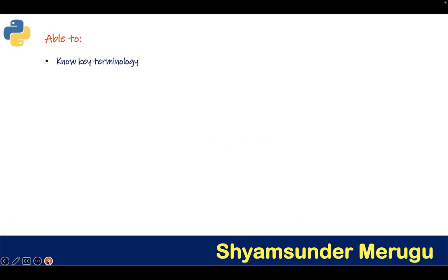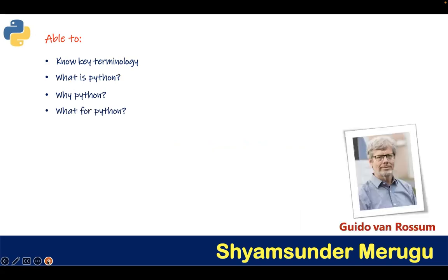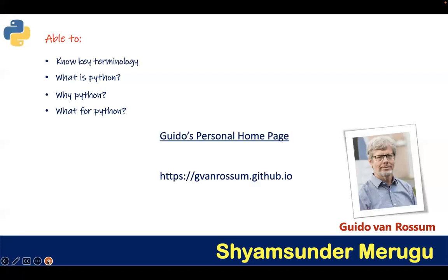Coming to this particular video lecture, you will be able to know what are the key terminology before learning any programming language, what is Python, why Python, and what for Python. Before starting this video course, we would like to know about the person who invented the Python programming language in 1991. He is Guido van Rossum. To know about him, you can visit his personal homepage at the given URL here.